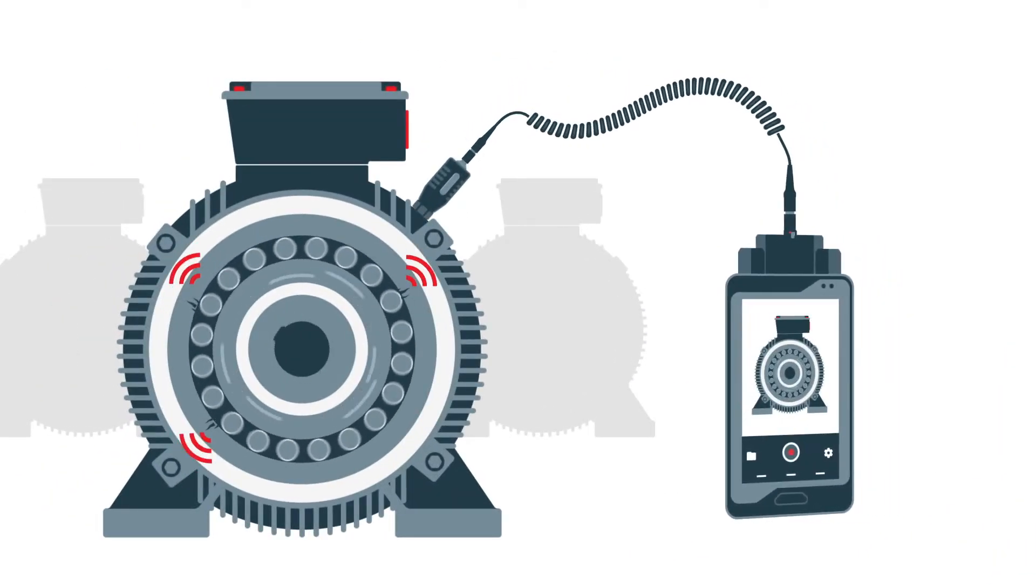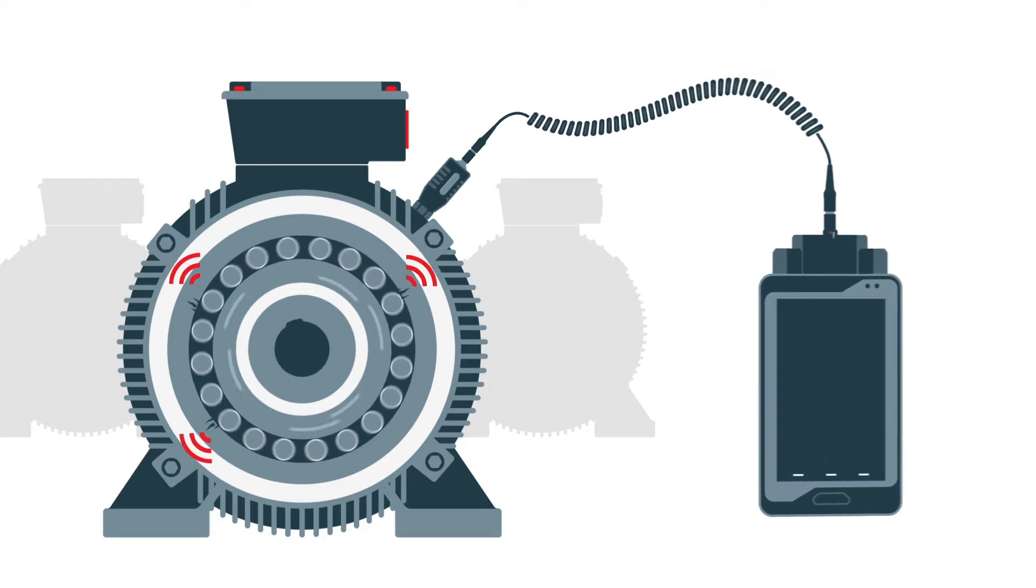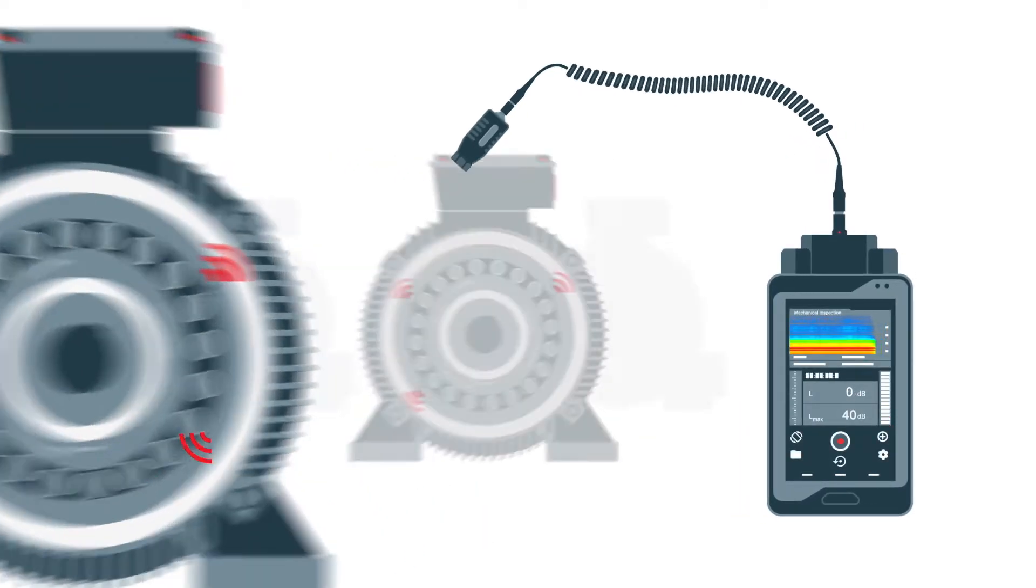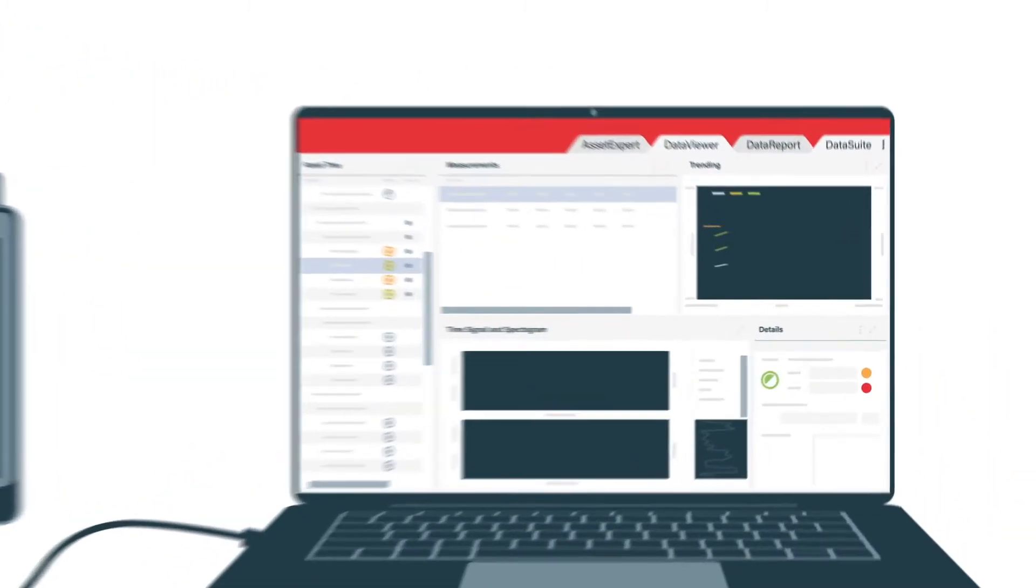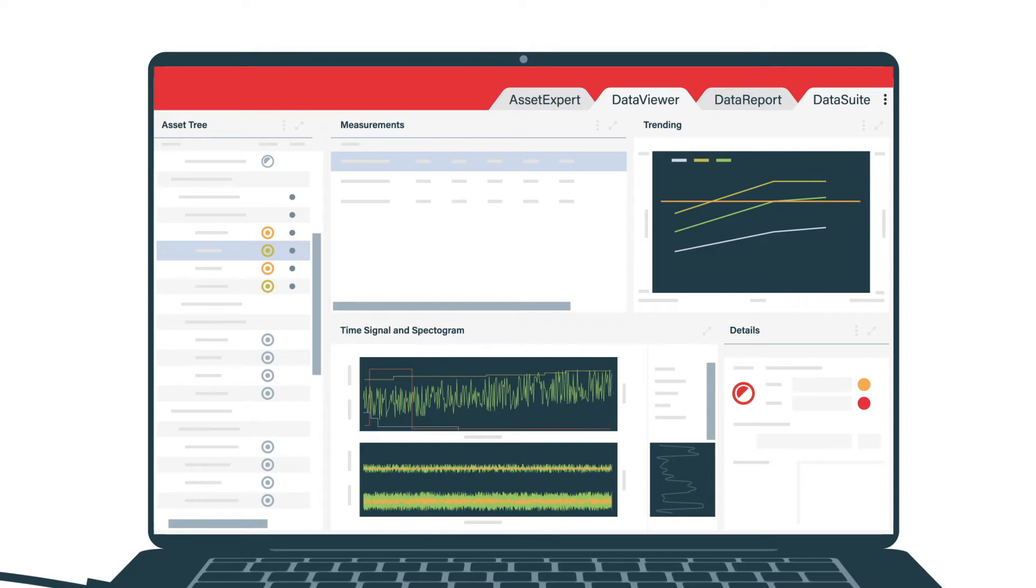Now all measurement points are run through step by step and then imported back into the web app. The maintenance manager sees immediately how the status of the measurement points has changed and where measures have to be initiated.